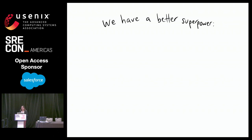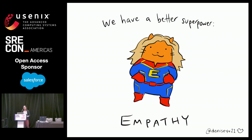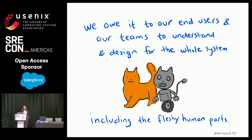We have a superpower that's even better than the Raft consensus algorithm: we have the ability to empathize with other humans, to try to imagine the world through the lens of another human being. The message I want to leave you with is: we owe it to our end users and our teams — to the humans that we work with and work for — to understand and design for the whole system, including the fleshy and inconvenient human parts.